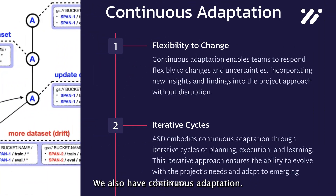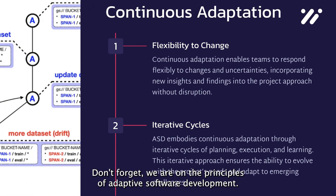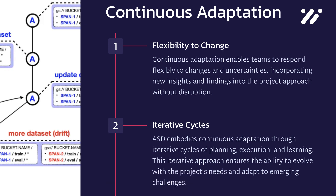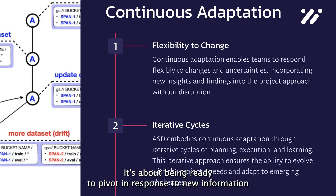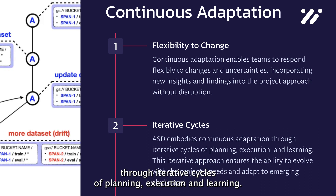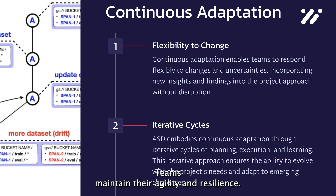We also have continuous adaptation. Continuous adaptation is what makes ASD truly agile. It's about being ready to pivot in response to new information or changes in the environment. Through iterative cycles of planning, execution, and learning, teams maintain their agility and resilience.